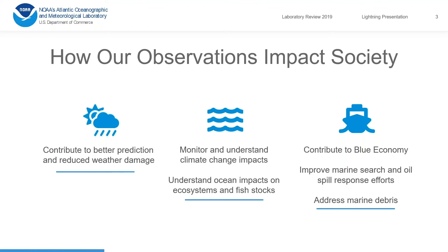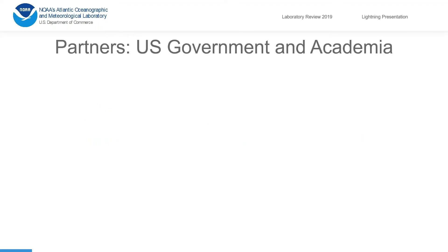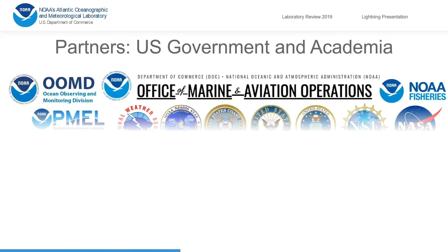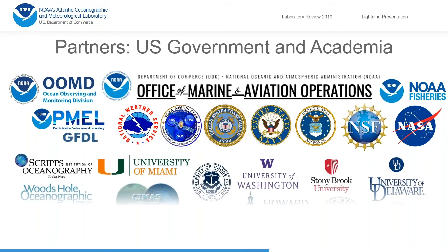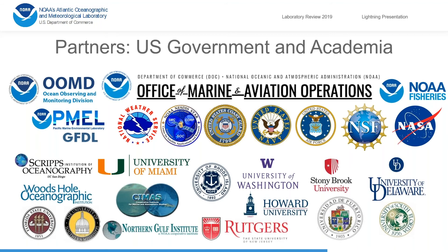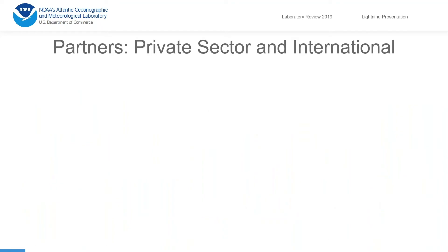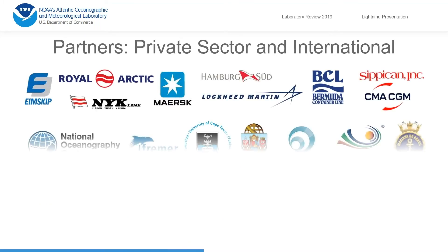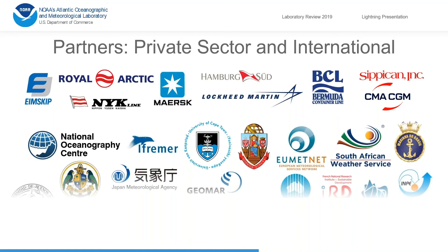There are a number of societal and science drivers for these observations ranging from improving forecasts to monitoring climate change to contributing to the blue economy. You'll be hearing specific examples in the lightning talks to come. We have a large number of partners within the United States, both within NOAA and U.S. agencies, and across the country a very large list of academic partners — this is only a partial representation of that list. We also partner with private manufacturers and companies and with international organizations to leverage ship time to maintain global arrays of instruments.